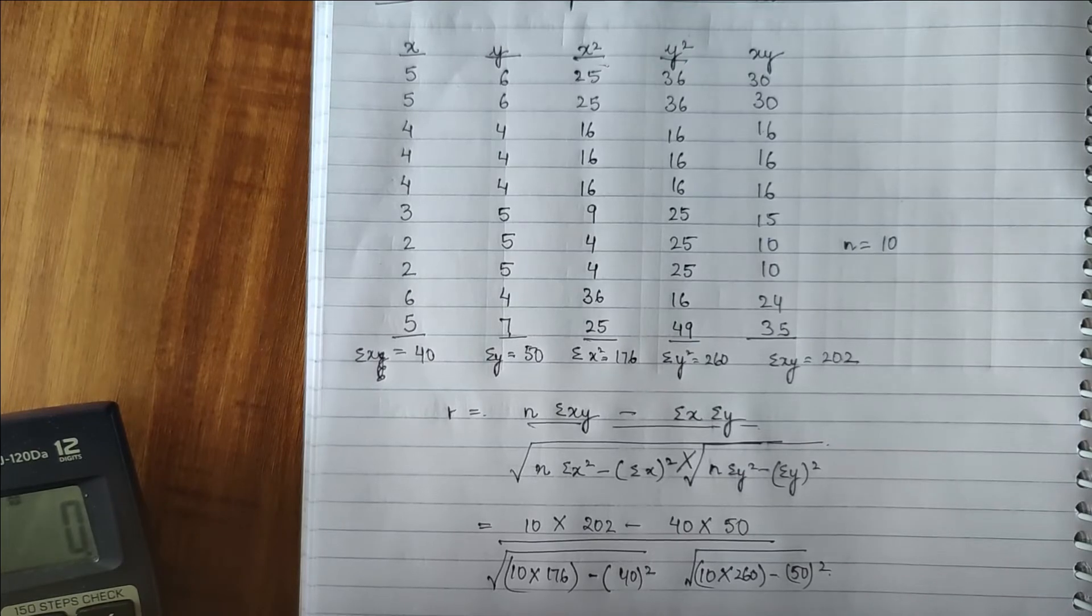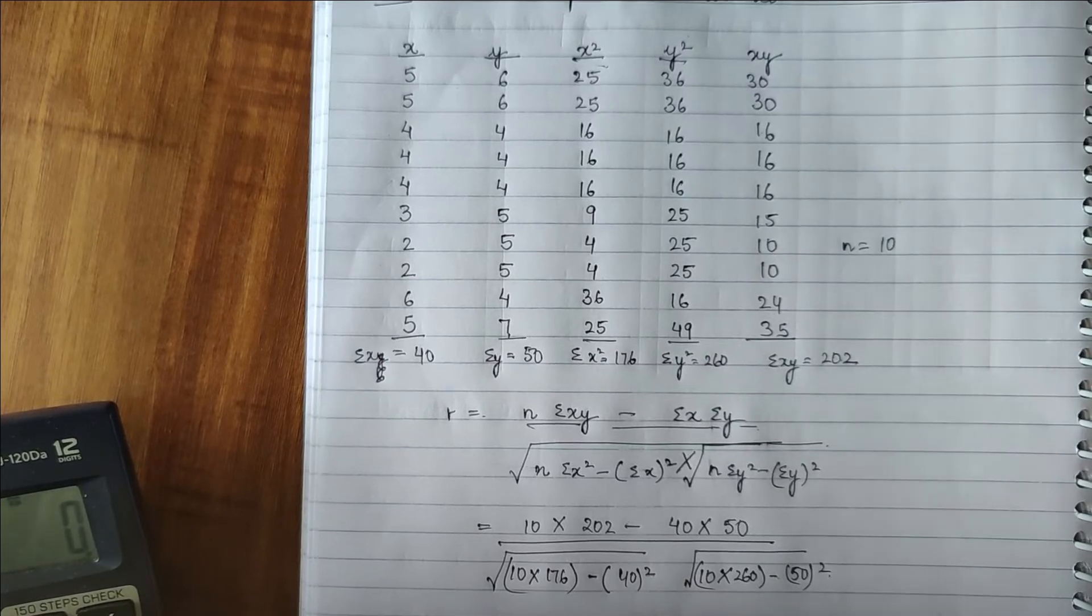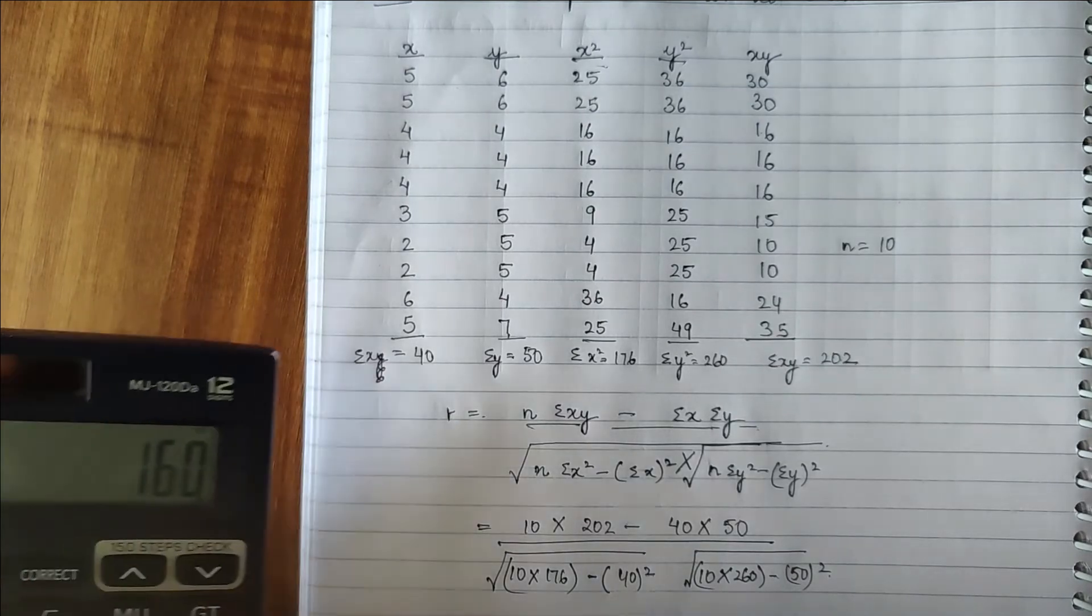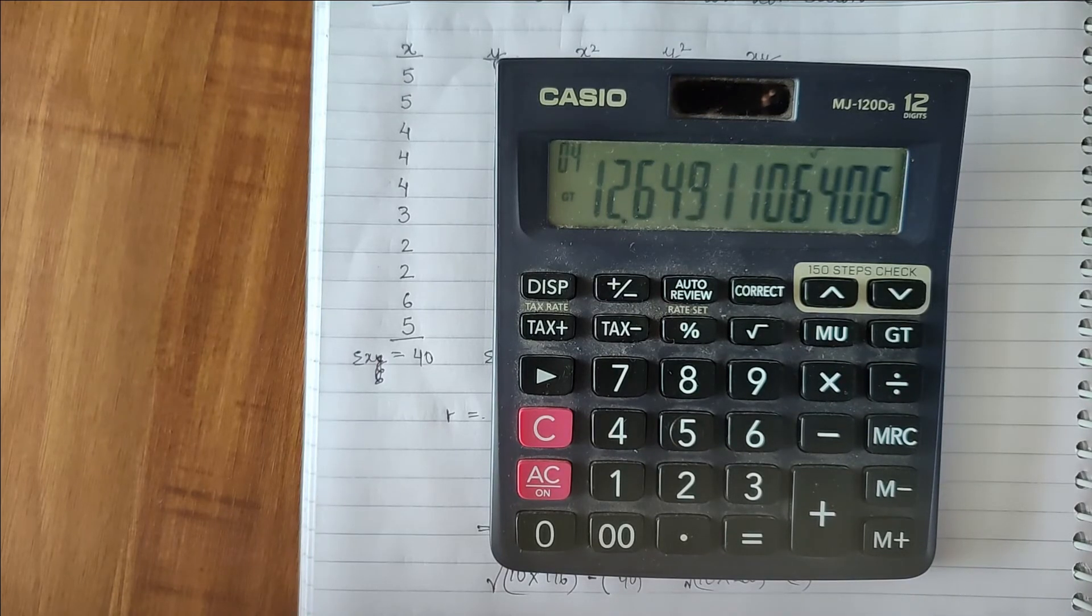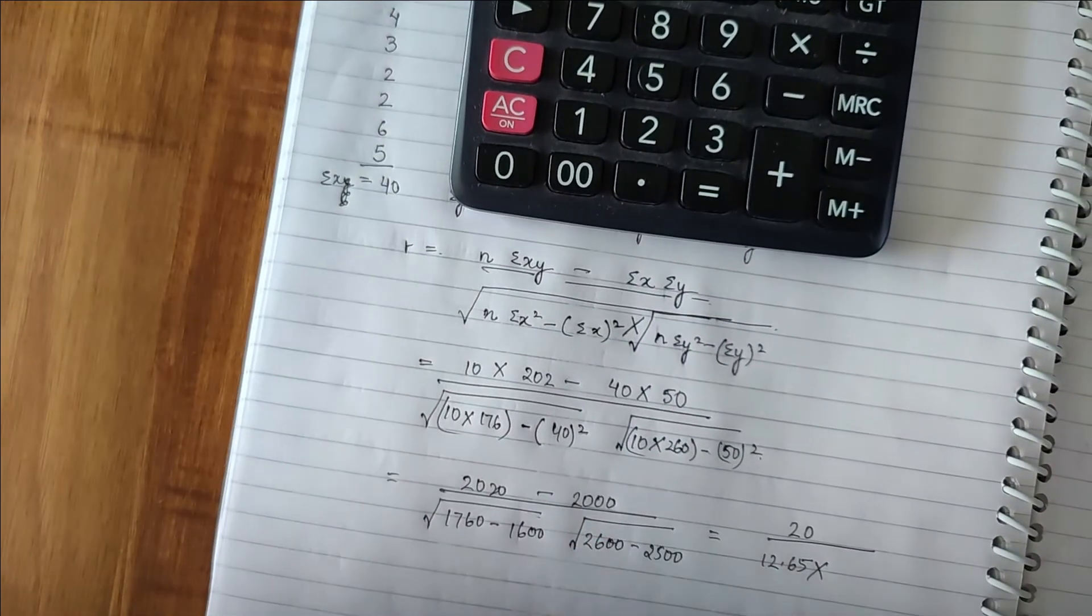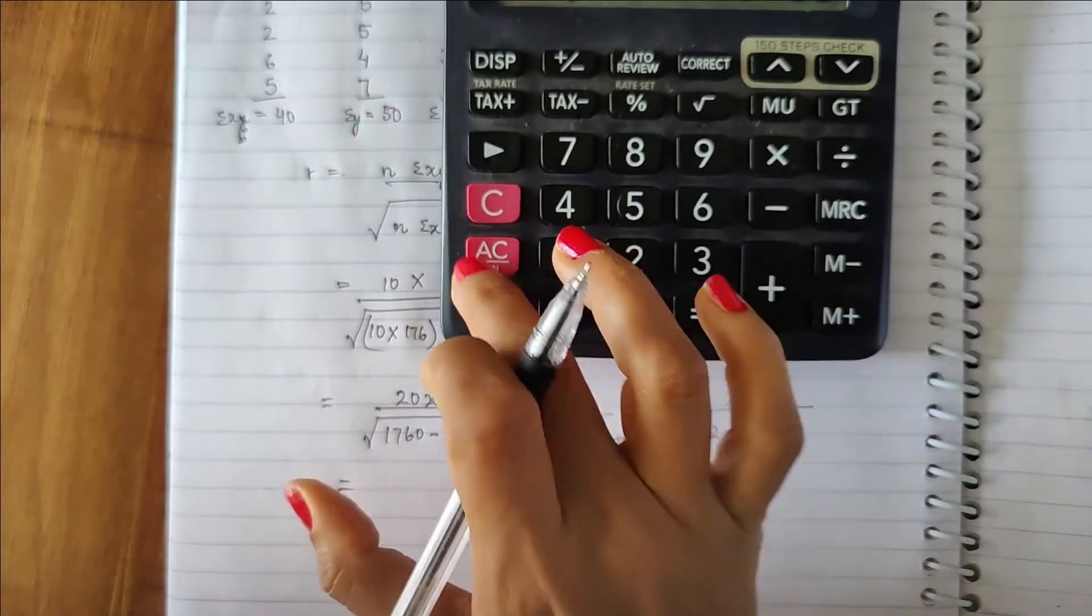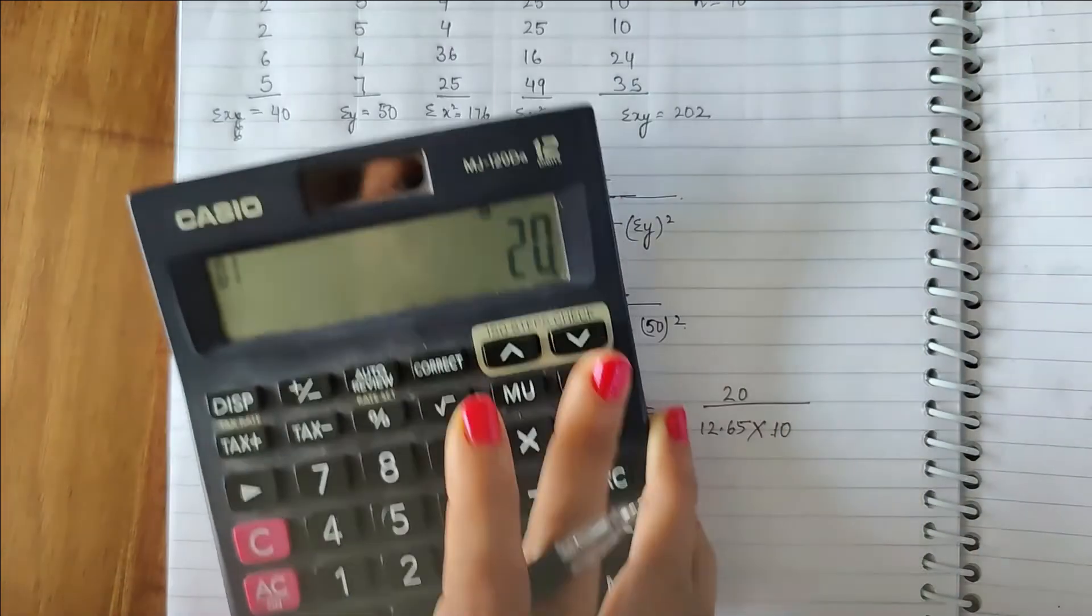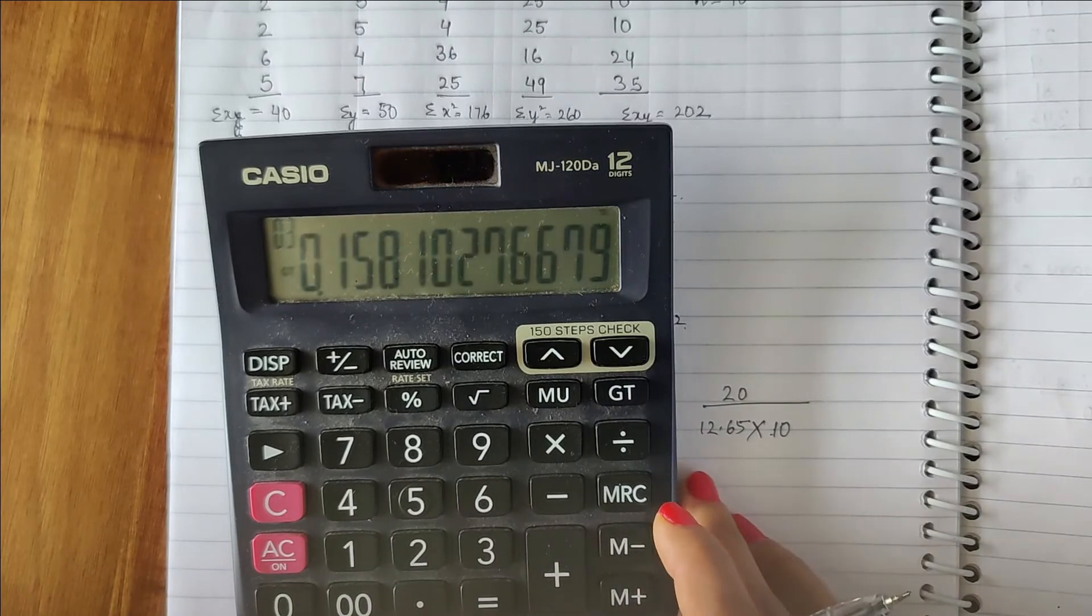2600 minus 2500, right, 20 upon 1760 minus 1600 is 160 and we take the root of 160 so it is 12.65 and multiply by 2600 minus 2500 was 100, sorry it's not visible, 100. Under the root is 10. So we have to solve 20 divided by 12.6, 126.5 is equal to 0.158.